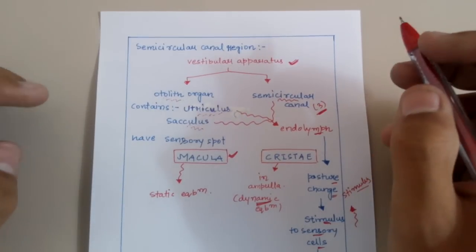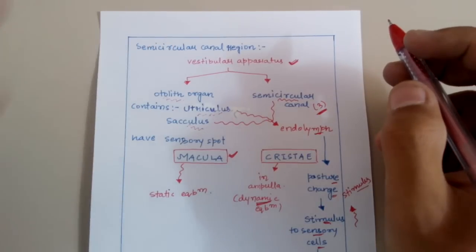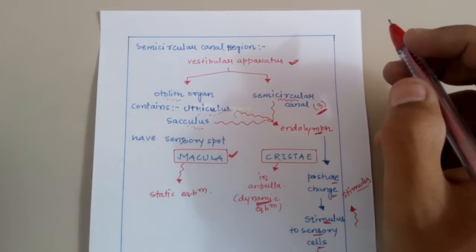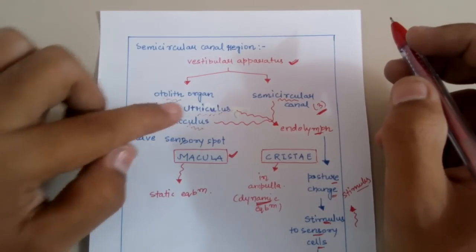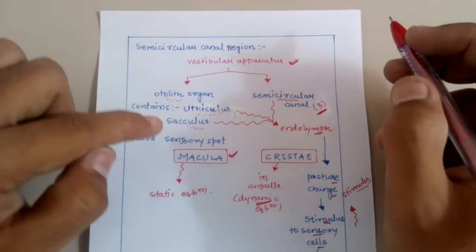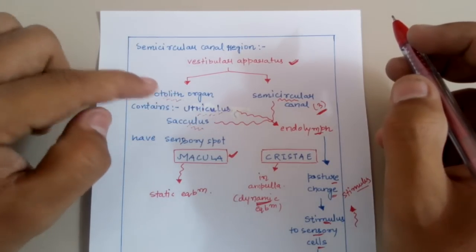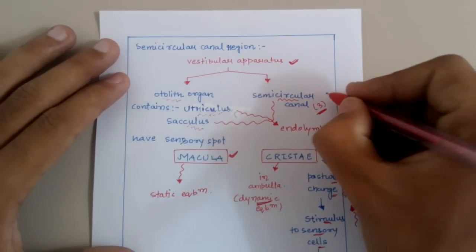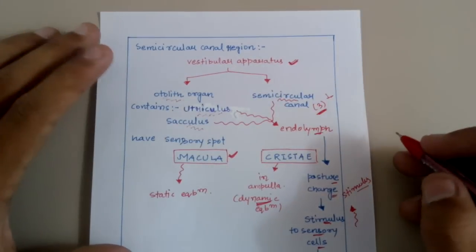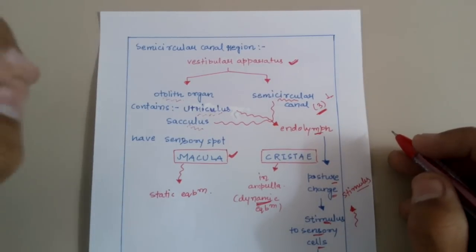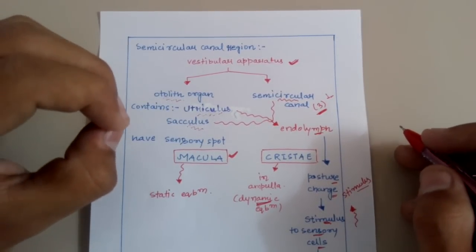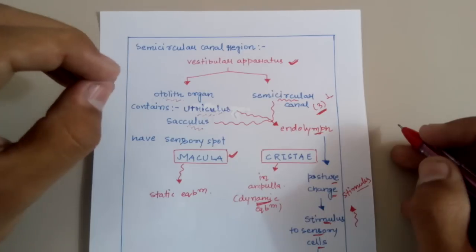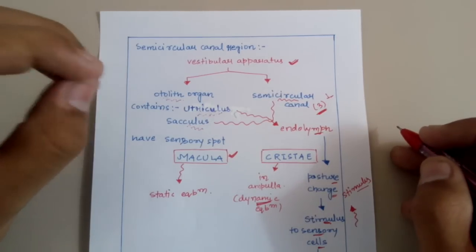What is the otolith organ? Just beside the semicircular canals we have two different structures — the utriculus and sacculus — which we learned in the previous lecture. Those structures, the utriculus and sacculus, form the otolith organ. The remaining part of the internal ear — the three semicircular canals present perpendicular to each other — form the other region. Importantly, all these structures — the utriculus, sacculus, the otolith organ, and the semicircular canals — are filled with endolymph.